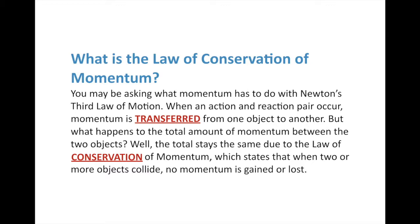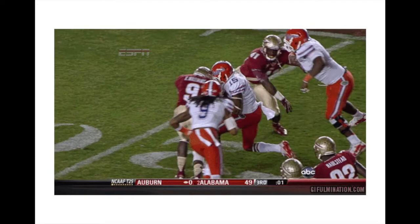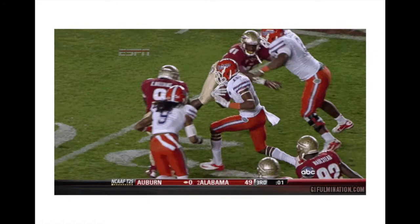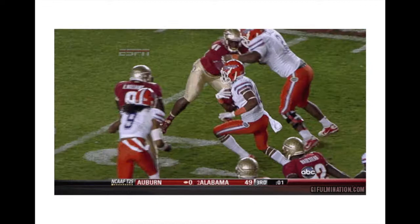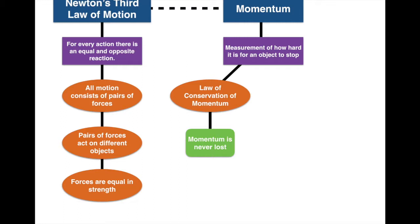When objects collide, momentum is actually transferred from one player to another. Let's fill out the graphic organizer with the law of conservation of momentum: momentum is never lost — it's just transferred from one object to the other. Even though something might come to a stop in a collision, it's not that the momentum is lost — it's transferred and absorbed. We'll talk about that in our next section when we discuss the two major types of collisions.